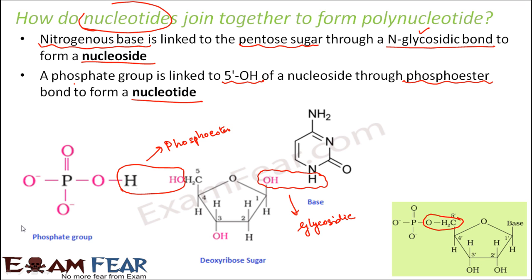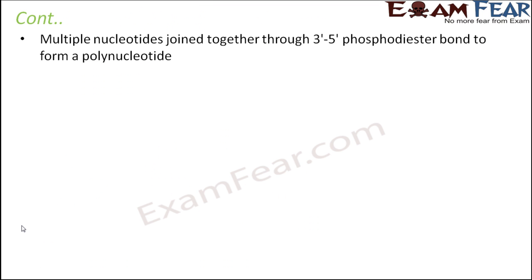When you talk about the structure of DNA or RNA, they are polynucleotides — they have multiple such nucleotides which are linked to each other. When multiple nucleotides are linked to each other, a bond is required to join one nucleotide to another. So let us see how that is done.